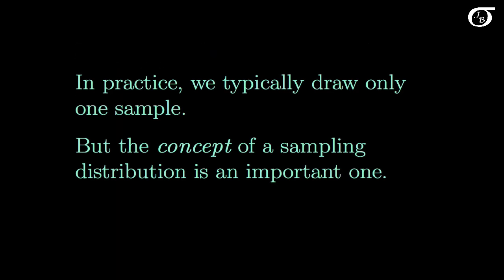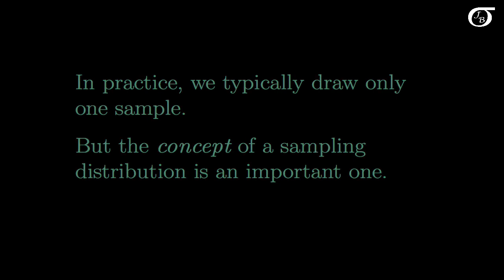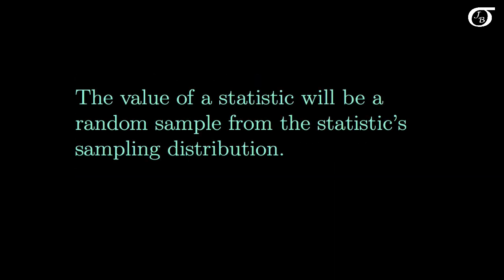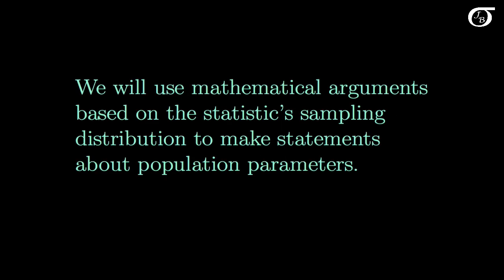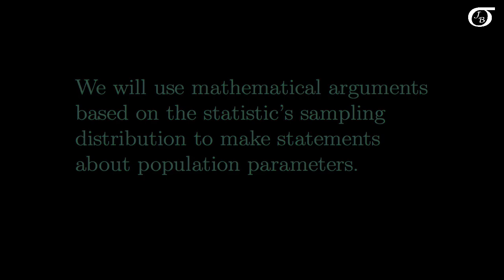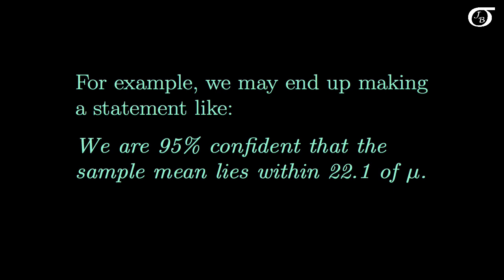Note that in practice we don't repeatedly sample from the population — we typically draw only one sample. But the concept of a sampling distribution is an important one. The value of a statistic that we see in our sample will be a random draw from that statistic's sampling distribution. We will use mathematical arguments based on the statistic's sampling distribution to make statements about population parameters, and this is going to play an important role in statistical inference. When all is said and done, we will end up making statements like: we are 95% confident that the sample mean lies within 22.1 units of mu — and we're allowed to say things like 95% and 22.1 based on mathematical arguments related to the sampling distribution of the sample mean.